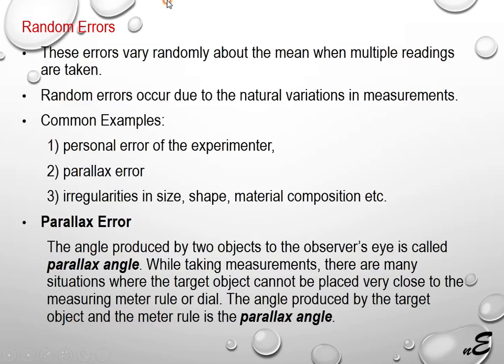Random errors: these errors vary randomly about the mean when multiple readings are taken. Random errors occur due to natural variations in measurements. Common examples include personal error of the experimenter and parallax error.